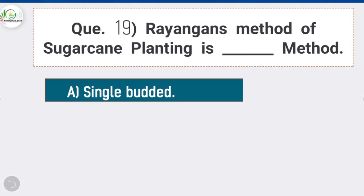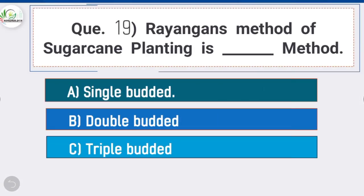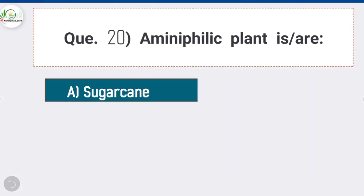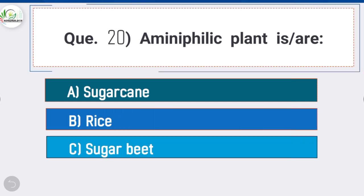Question 19: Rayangan method of sugarcane planting is a — option A is correct: single-budded method. It is the Indonesian term meaning a developed cane shoot with single sprouted bud. It is costly, hence not commonly adopted in India; however, it is used for gap filling.